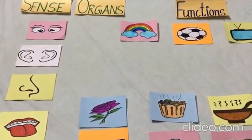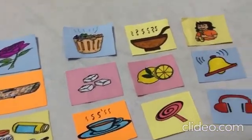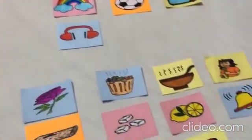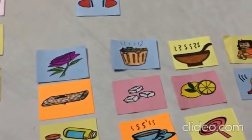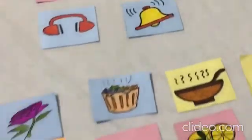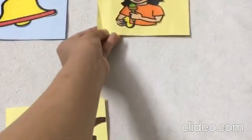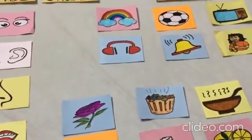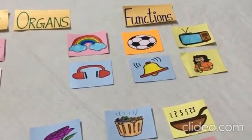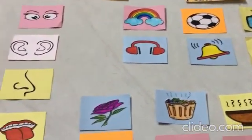The next sense organ is our ears. So what can we do with the help of our ears? We can listen to music with the help of our ears. We can hear a ringing bell, and we can also hear a child who is singing or saying something. Hum ghanati ko sun sakte hain aur kisi aise bache ya insaan ko jo gana gaa raha hai ya kuch bol raha hai.